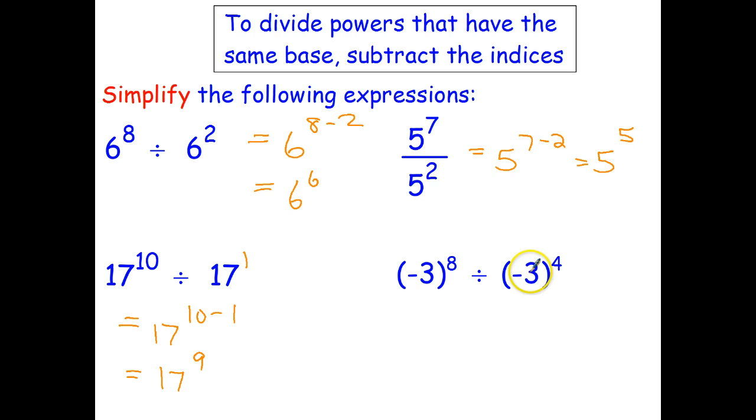And index laws work perfectly well with negative bases. So that's just going to be in brackets, negative three to the eight minus four equals negative three to the power of four. So index law number two: if the bases are the same, to divide powers, subtract the indices.